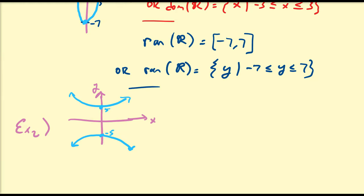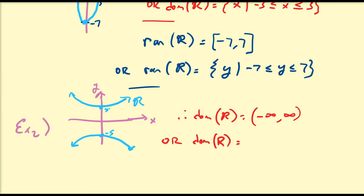Based on this graph and that interpretation, the domain of this relation — let's call it r again — is going to be equal to all real numbers from negative infinity to infinity. You can never reach positive or negative infinity, so we always put parentheses there. Or in set notation, the domain of r is the set of all x such that x is a real number.